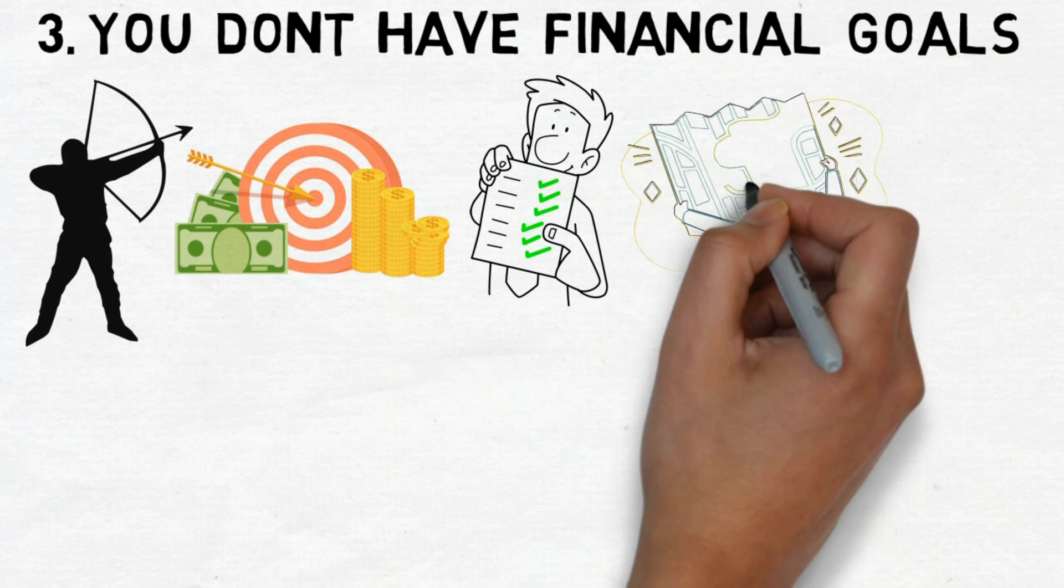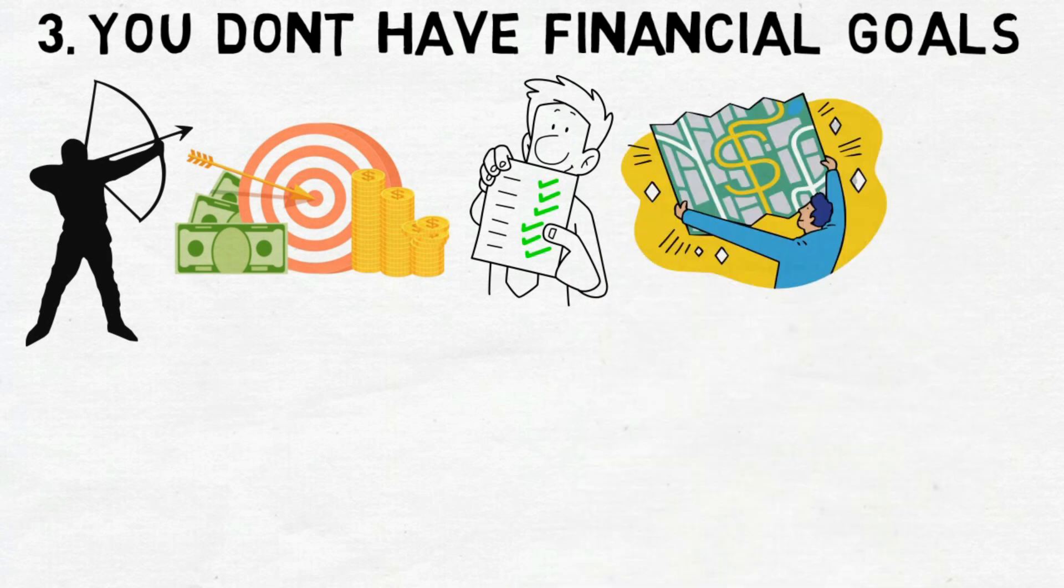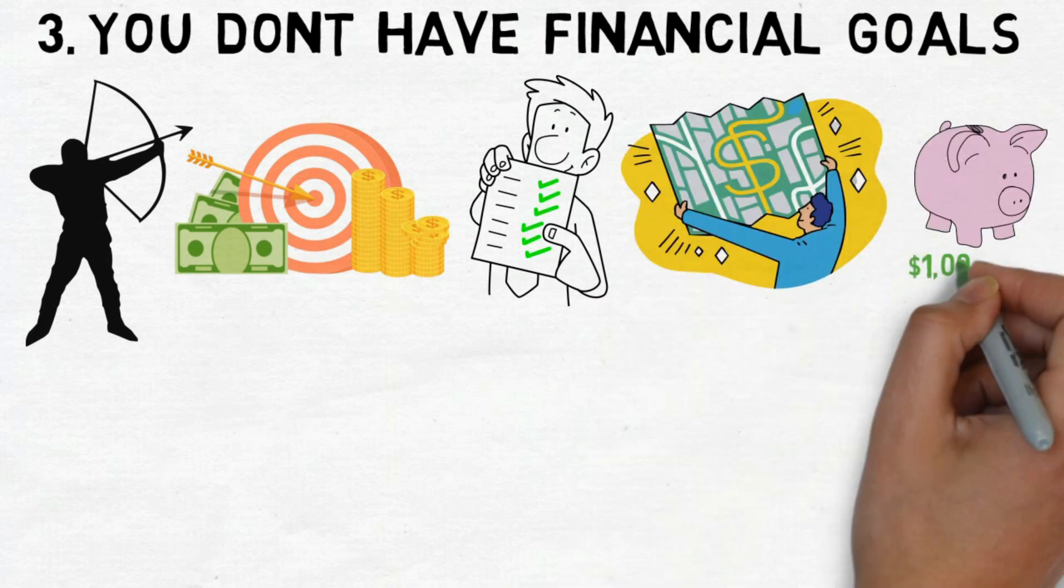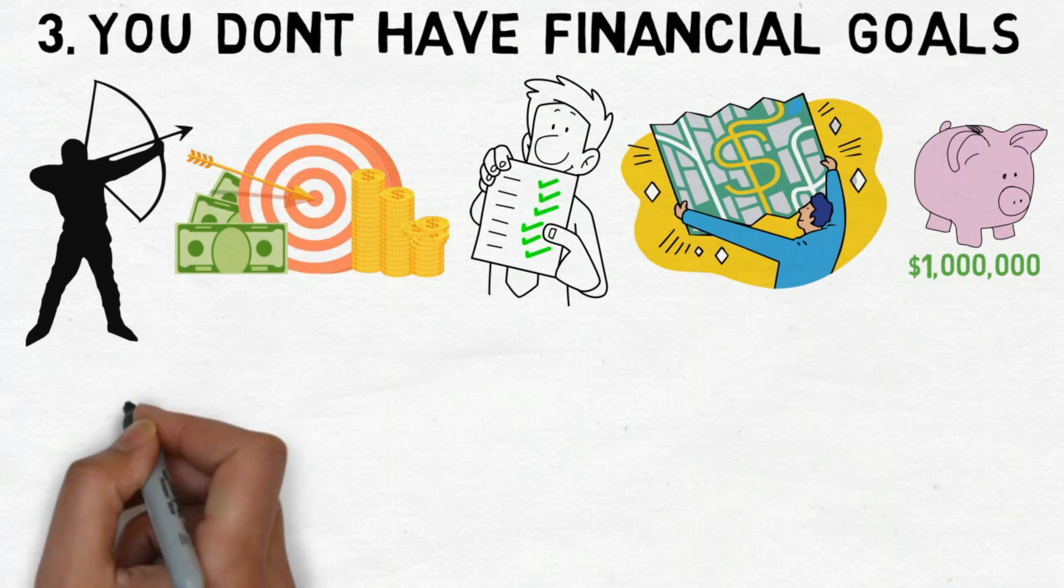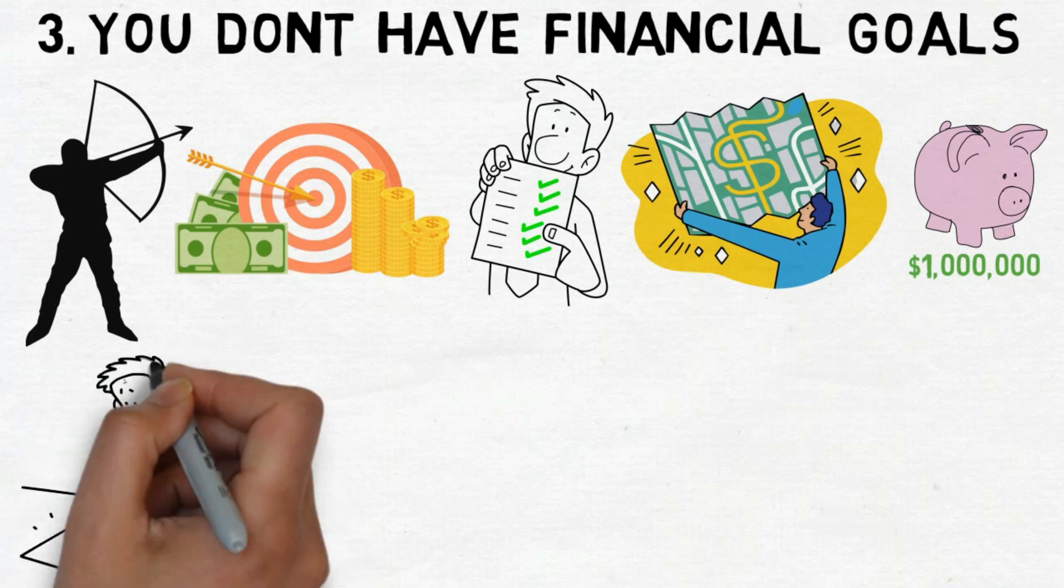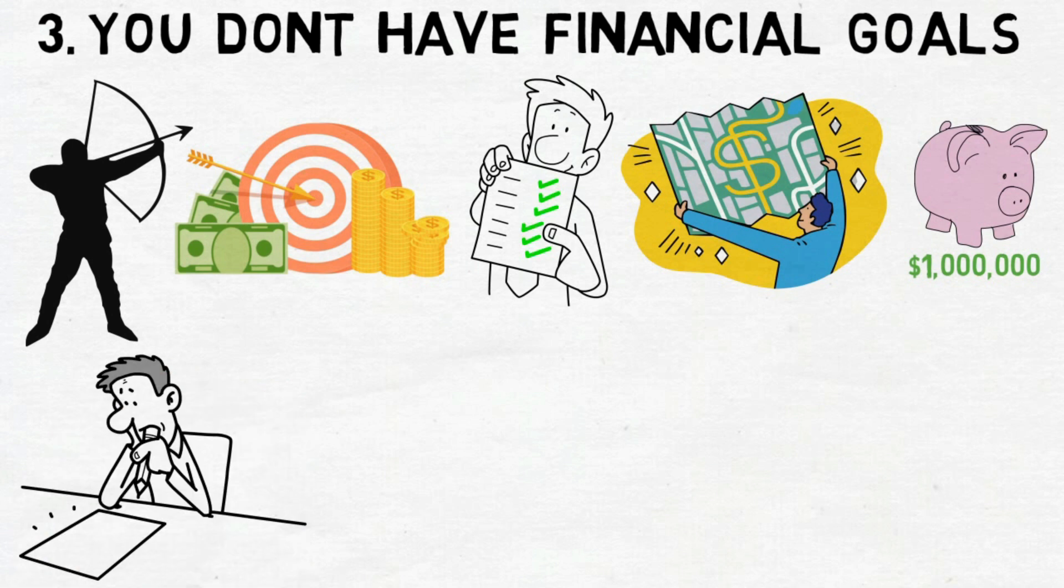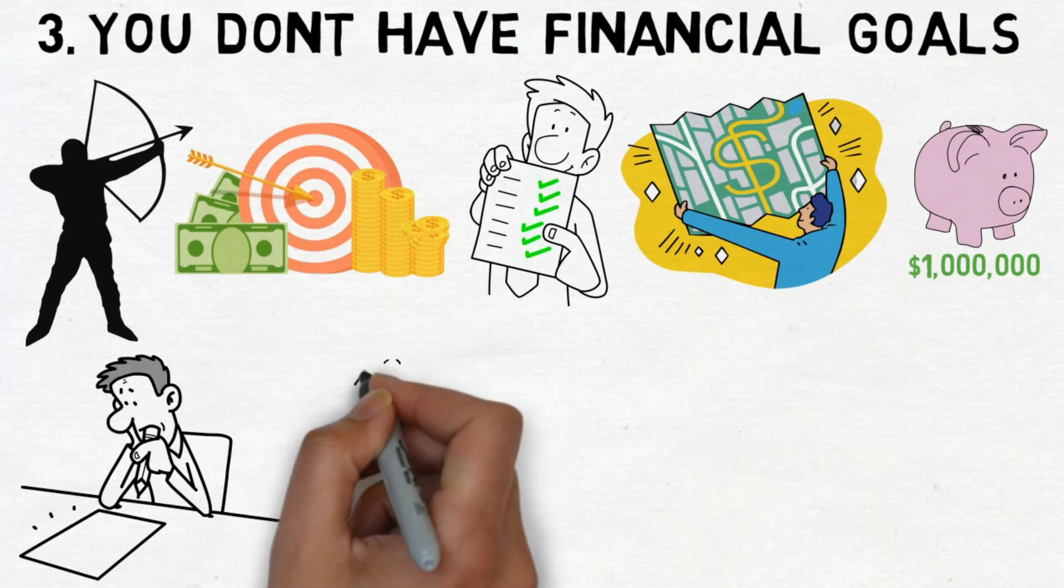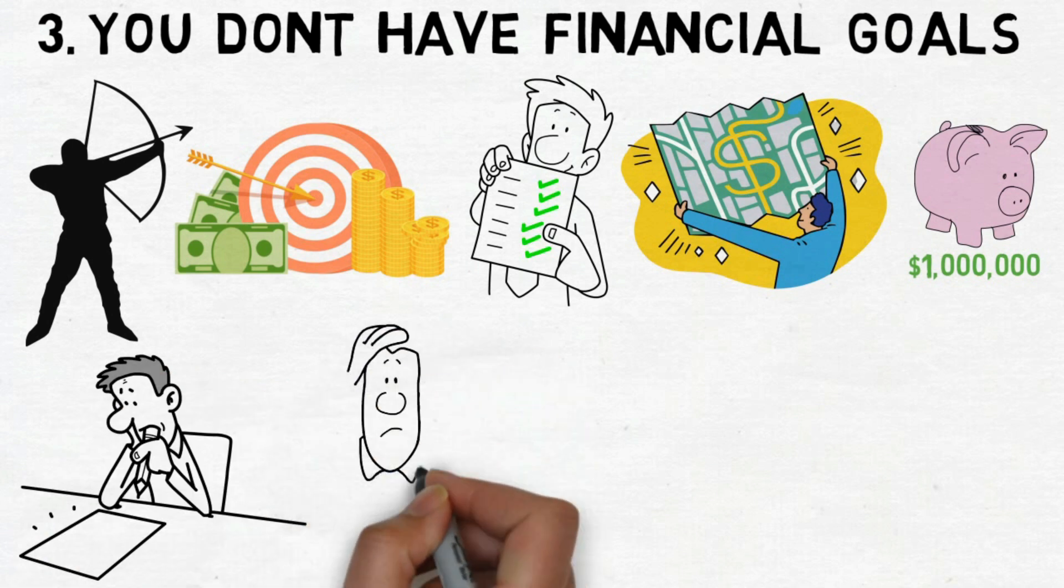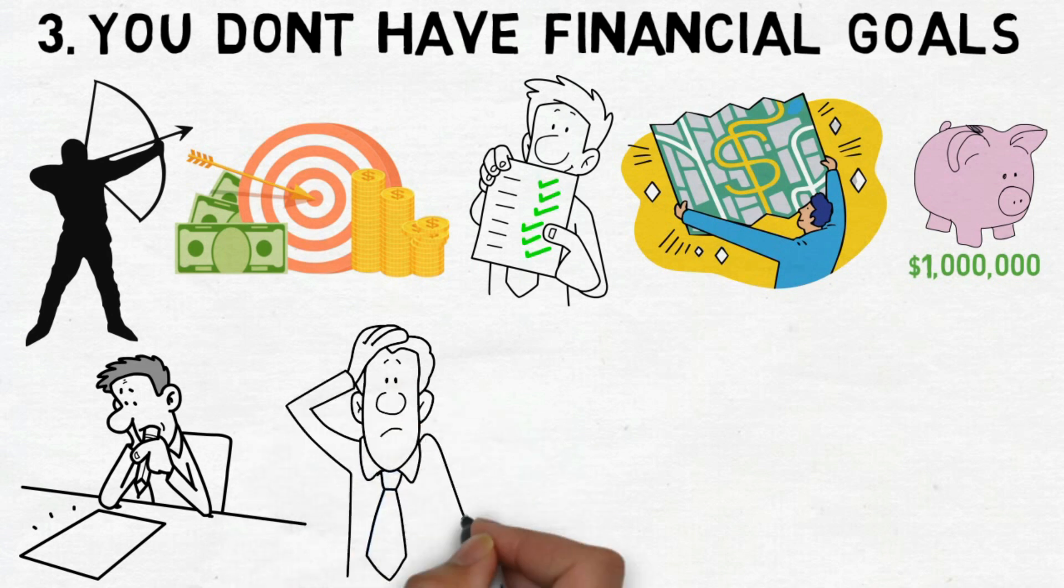For example, think about wanting to save a million dollars. First, you need to write down this goal, and then carefully plan the steps to make it happen. Unfortunately, individuals with limited financial means encounter an initial hurdle, since they often lack the clarity necessary for this foundational step.